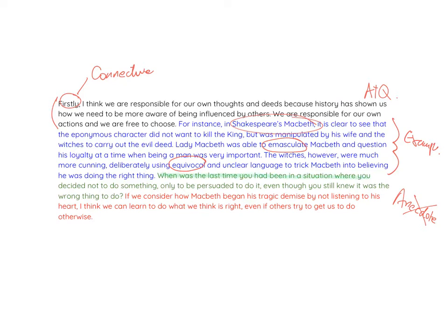I've gone straight in for the rhetorical question: 'When was the last time you've been in a situation where you decided to not do something, only to be persuaded to do it even though you still knew it was the wrong thing to do?' Now that's probably quite a long rhetorical question and perhaps loses some of its punch through being a lot longer. But I'm not just saying 'what do you think?' - I'm trying to guide my reader into thinking what I want them to think. Interestingly, I've started this sentence with the word 'when'. What I'm trying to say is there is a time when that's happened to you - so think when it was, not 'can you think of a time', because that suggests the answer might be no. By starting with 'when', I've made that rhetorical question much more powerful.